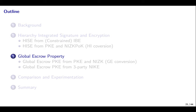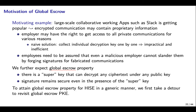We then describe an important extension of HISE with global escrow property. Nowadays, large-scale collaborative working apps such as Slack are getting popular, and encrypted communication may contain proprietary information. On one hand, employers may have the right to access all private communications. A naive solution — collecting individual decryption keys one by one — is impractical and inefficient. On the other hand, employees need assurance that even a malicious employer cannot slander them by forging signatures for fabricated communications. We refer to this as the global escrow property: there is a super key that can decrypt any ciphertext encrypted under any public key, while the signature remains secure even in the presence of the super key.